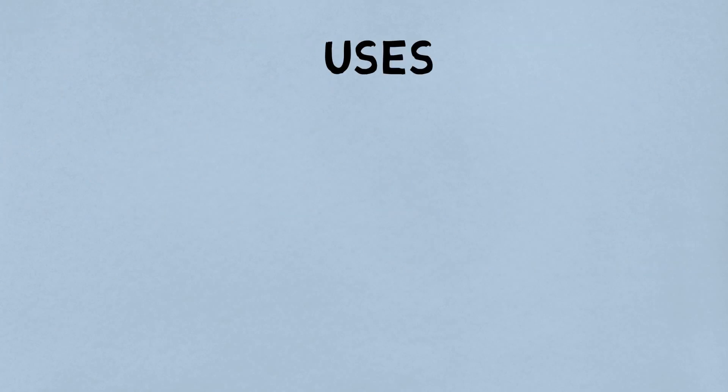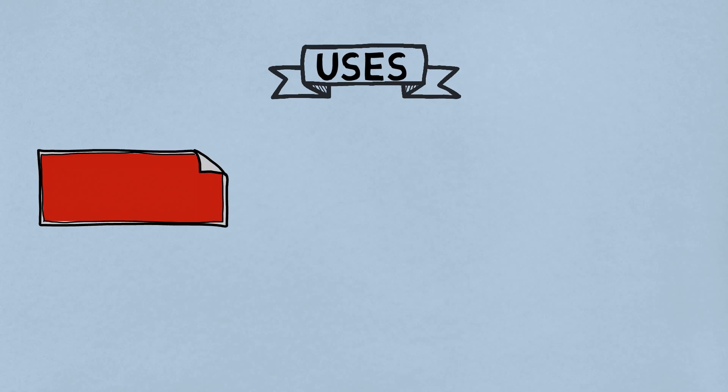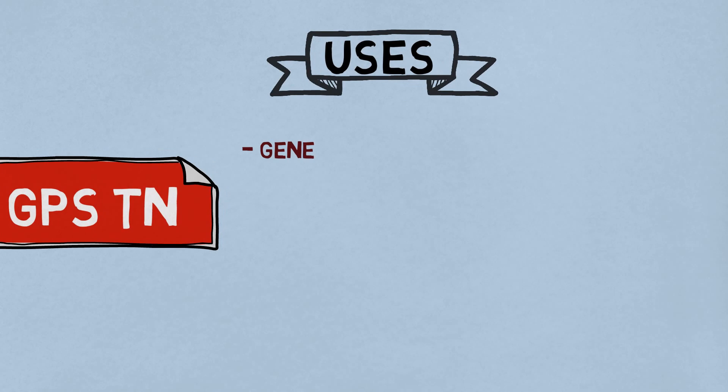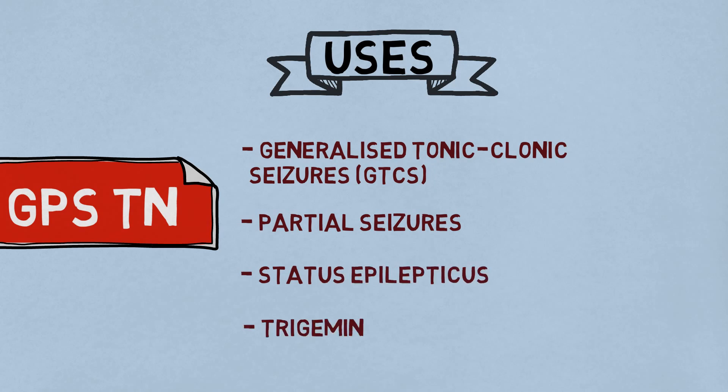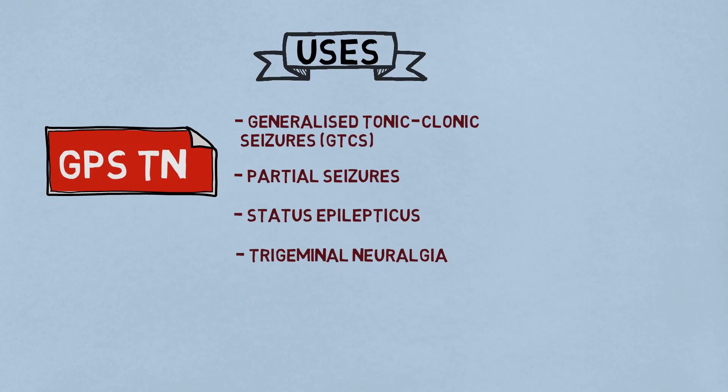Finally, uses of phenytoin. The mnemonic for this is GPS Tamil Nadu. Phenytoin is mainly used to treat generalized tonic-clonic seizures, GTCS, partial seizures, status epilepticus and trigeminal neuralgia.